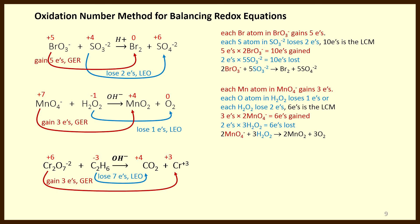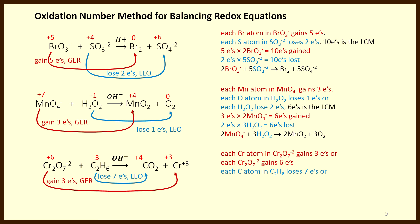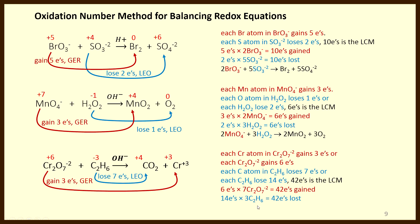Let's do the third example. Each chromium atom in dichromate is gaining 3 electrons, or each dichromate ion — containing 2 chromium atoms — will gain 6 electrons. Each carbon in ethane is losing 7 electrons, or each ethane molecule (C2H6) is losing 14 electrons. The lowest common multiple of 14 and 6 is 42. So 7 dichromates times 6 electrons is 42 electrons gained, and 3 ethanes times 14 electrons is 42 electrons lost. The stoichiometric ratio is 7 dichromates for each 3 ethanes.